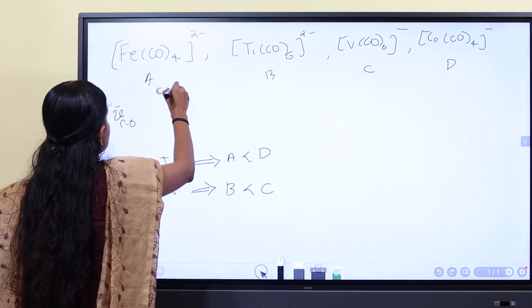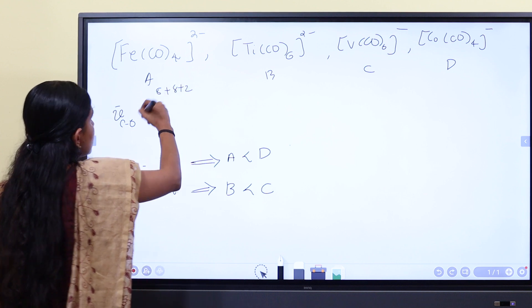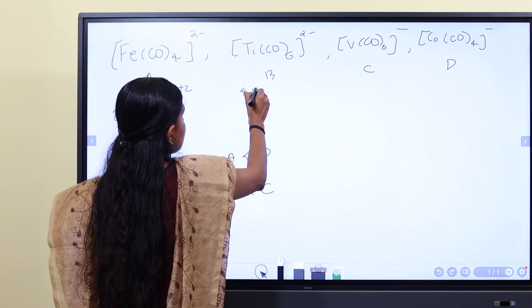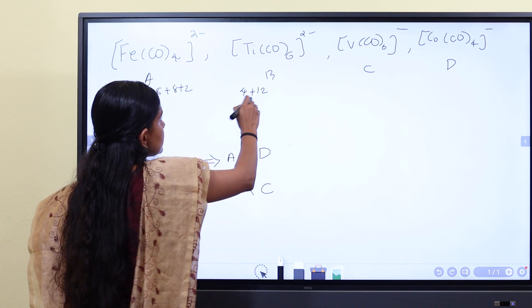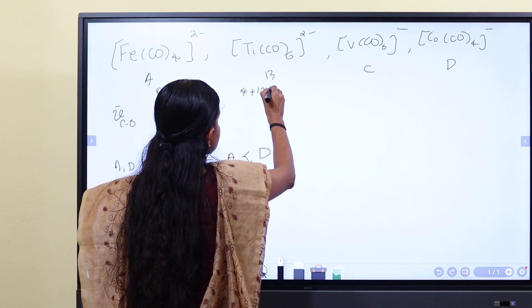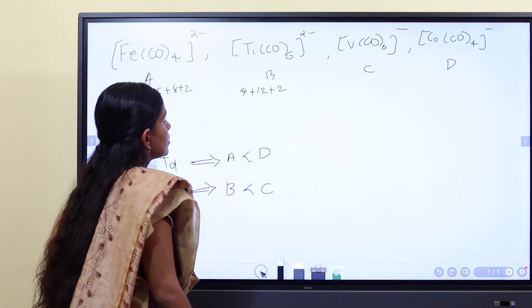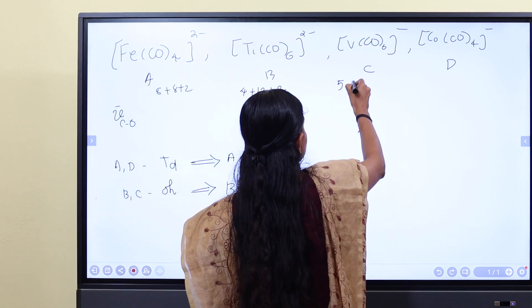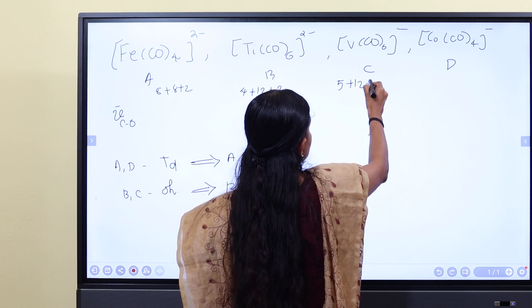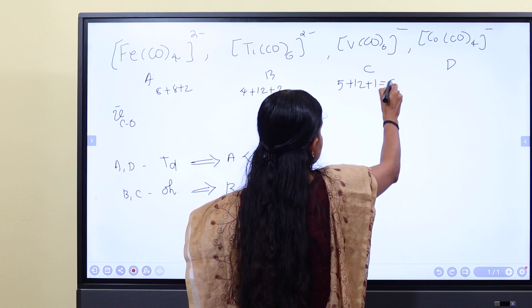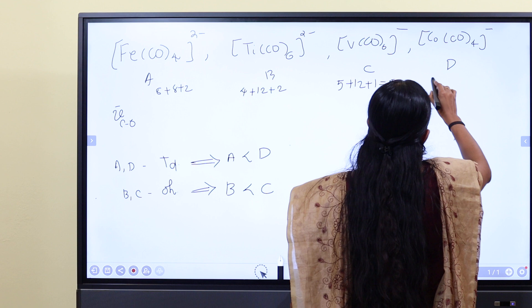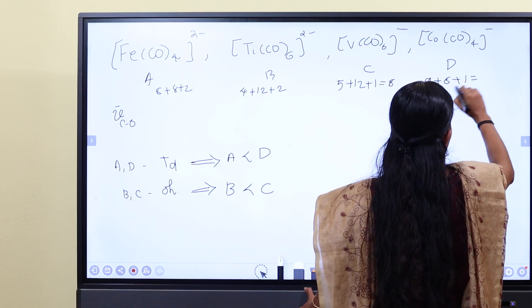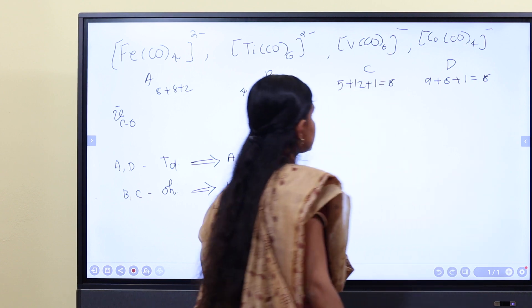8 + 8 + 2 = 18 for titanium. 4 + 12 + 2 = 18. Scandium titanium: 5 + 12 + 1 = 18. And 9 + 8 + 1 = 18. These are all isoelectronic species.